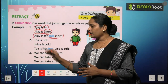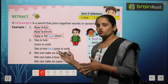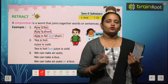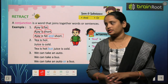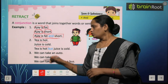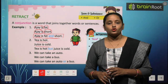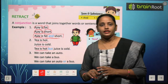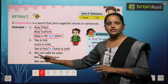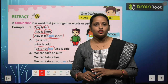Next example: 'Tea is hot. Juice is cold.' Tea गरम होती है और juice ठंडी होती है। यहाँ पर दोनों sentences में कुछ भी same नहीं है — एक hot है, दूसरा cold है, दोनों एक दूसरे के opposite हैं। तो इन दोनों sentences को join करने के लिए हमने 'but' को use किया। Sentence बना: 'Tea is hot, but juice is cold.'